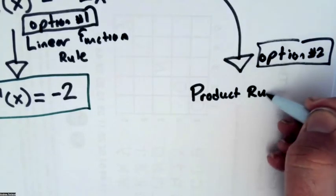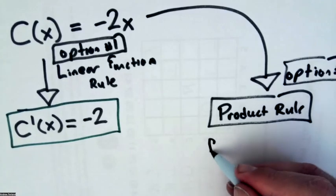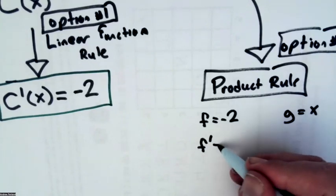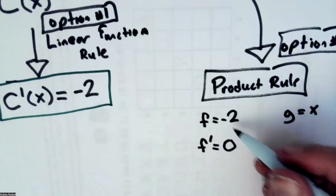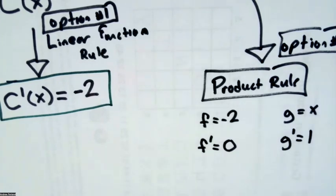So product rule, okay, I have to identify the two things that are being multiplied here. So my f would be negative 2, my g would be x, my f prime would be 0 because negative 2 is a constant not multiplied by anything, and g prime would be equal to 1.